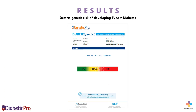The test will detect a patient's genetic risk of suffering from type 2 diabetes. This is shown in an easy-to-read report indicating whether the patient's risk is high, medium, or low.